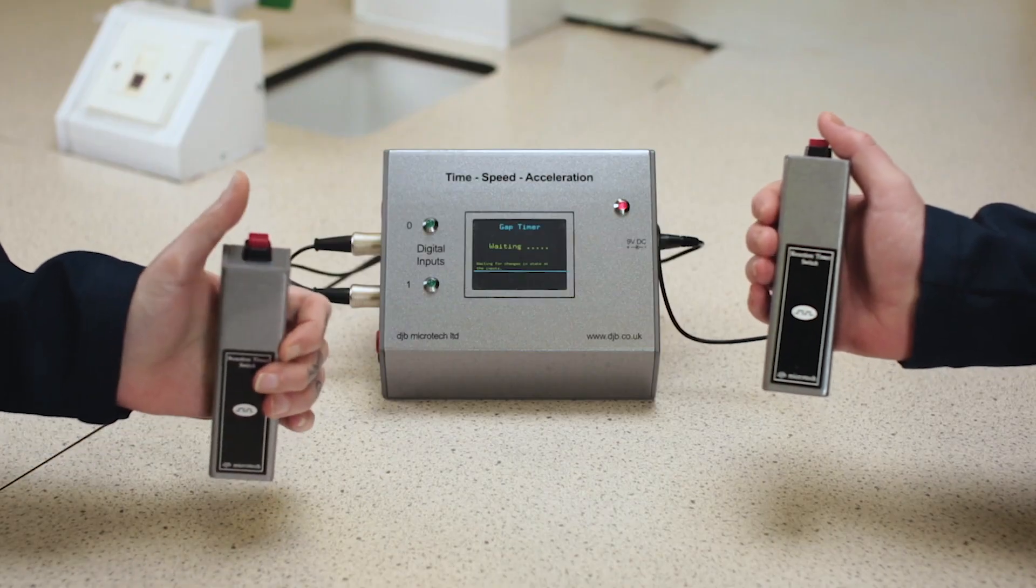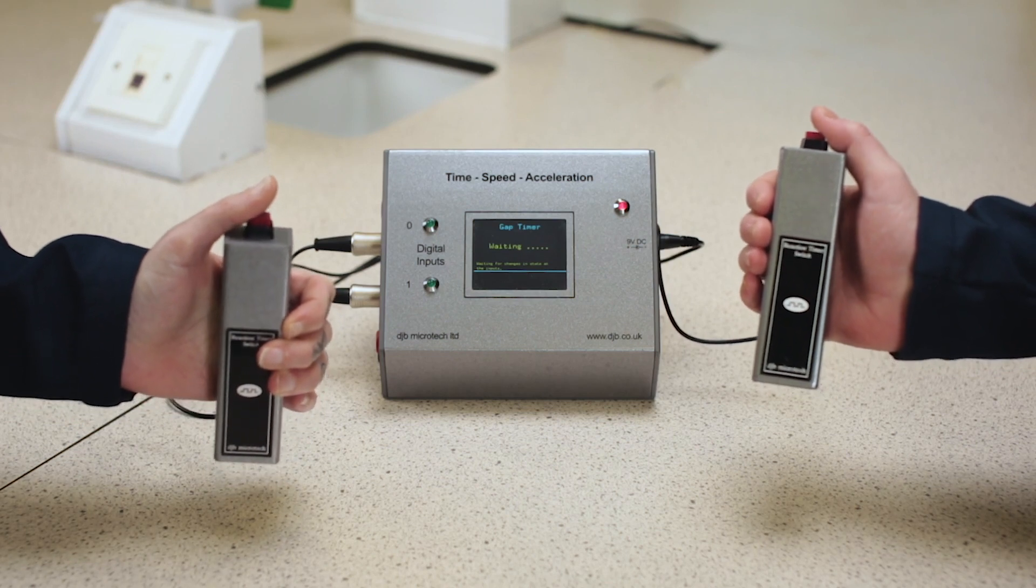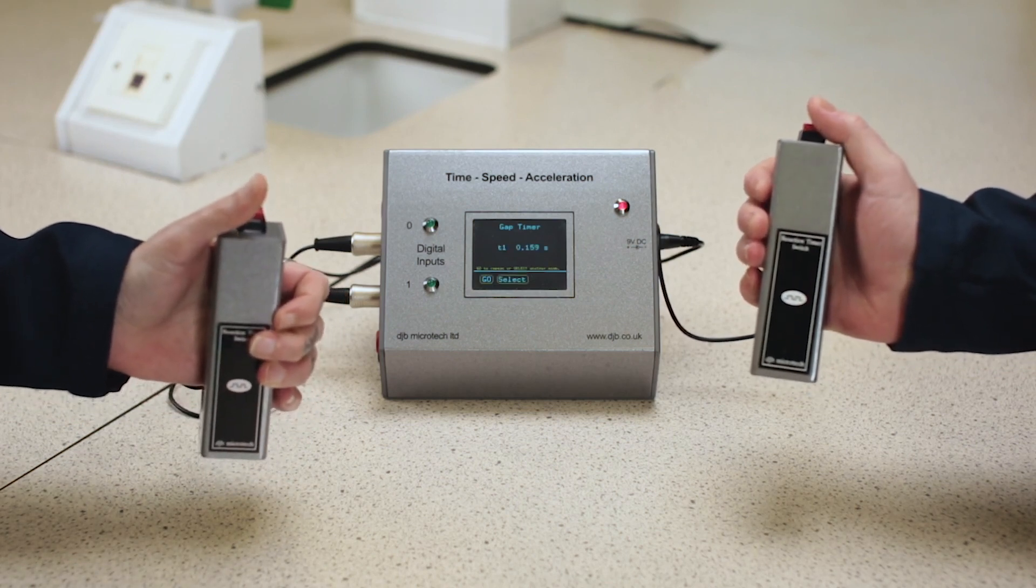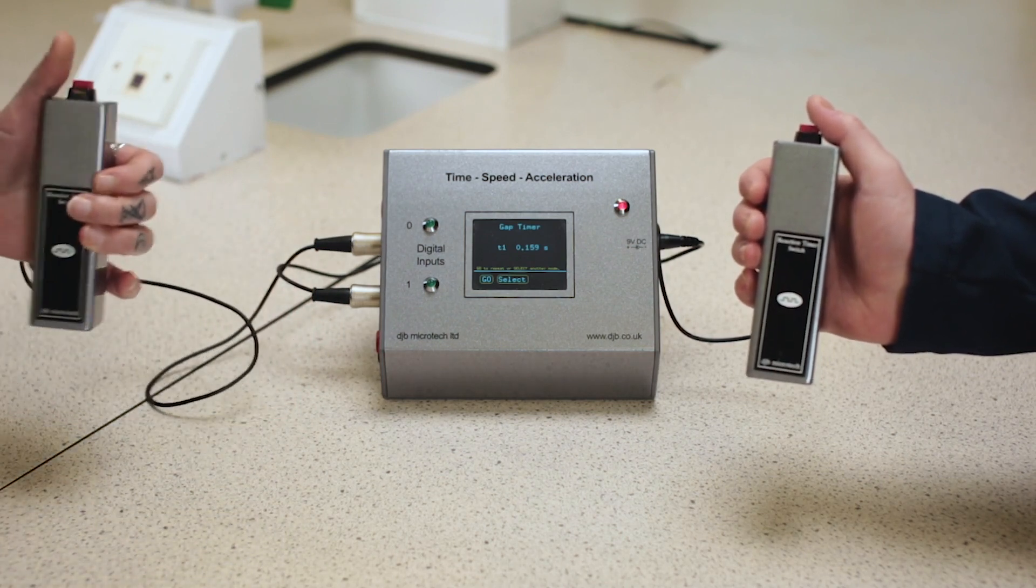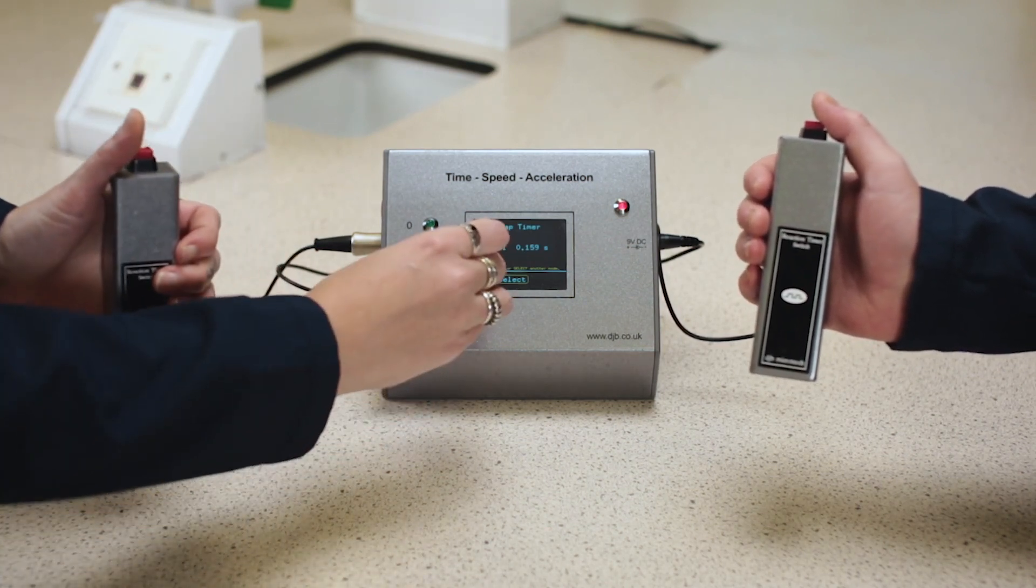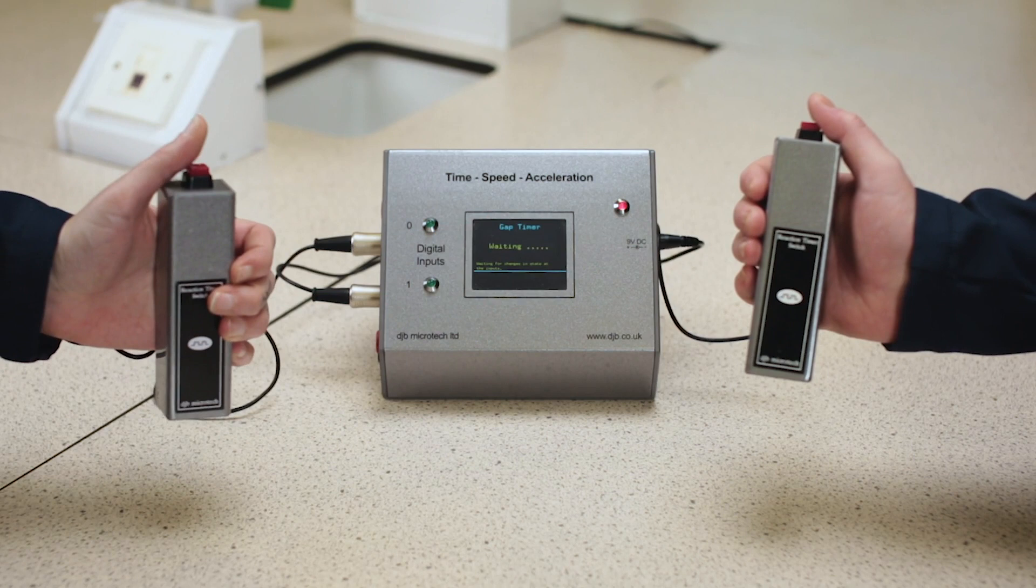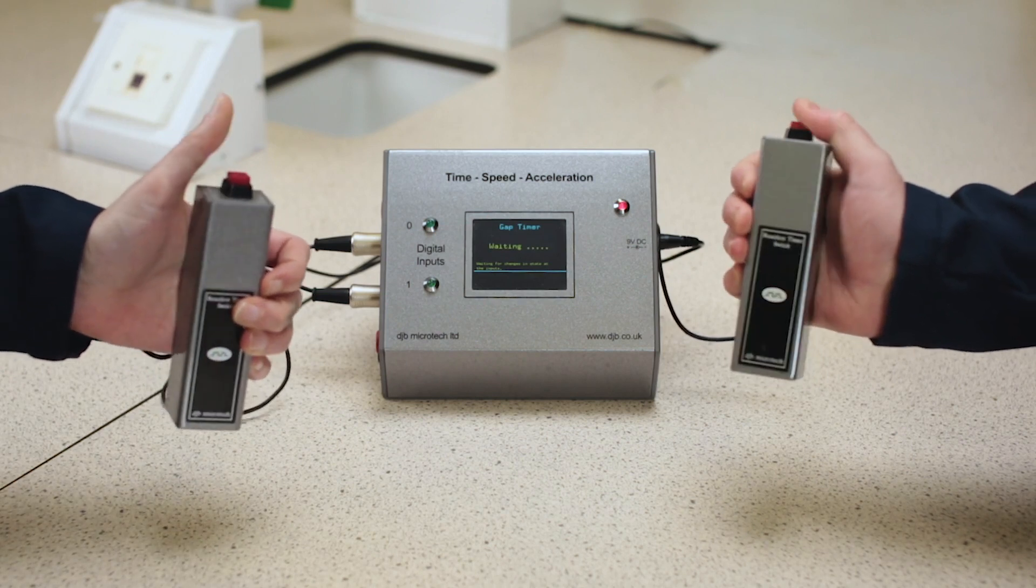When both pupils are ready, pupil 1, who has the 0 channel switch, will press the button. The green LED will light. As soon as the second pupil sees the green LED light, they press the button on their switch, and the timer will then display the reaction time of the second pupil.